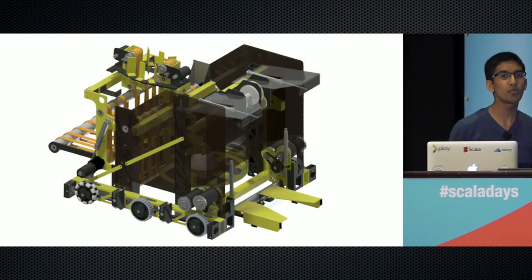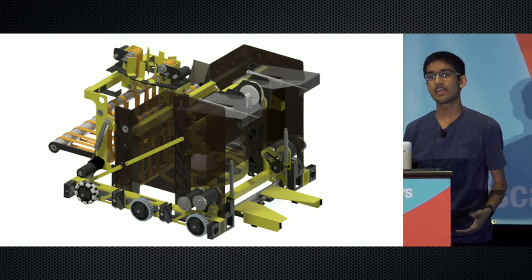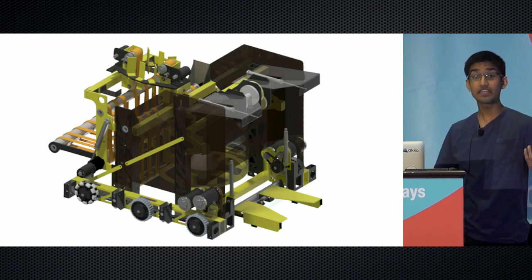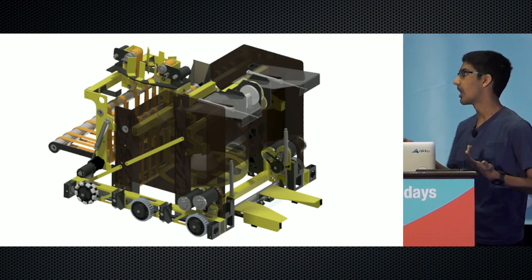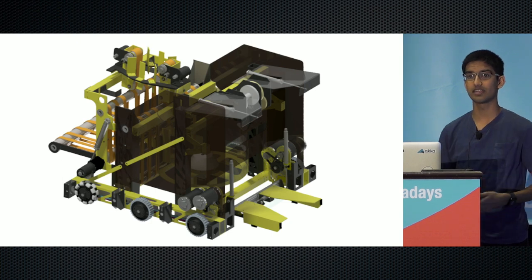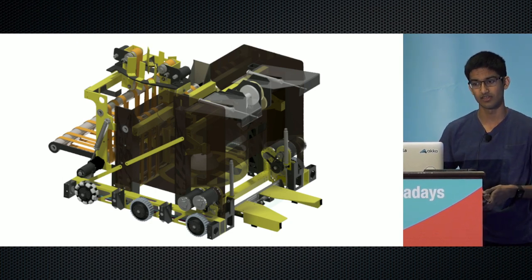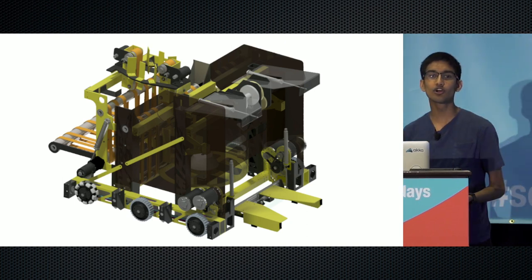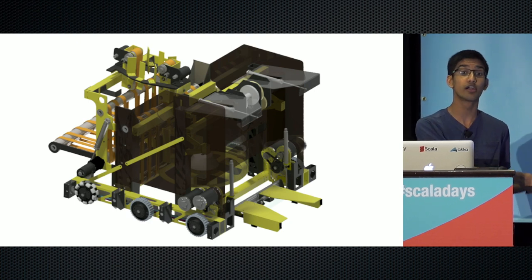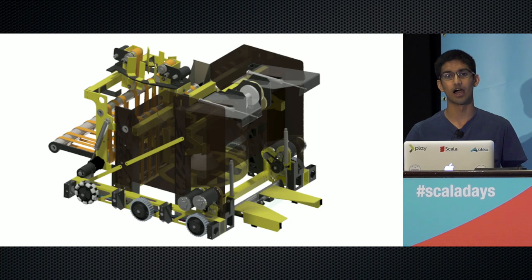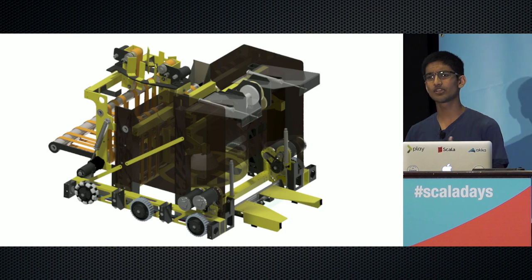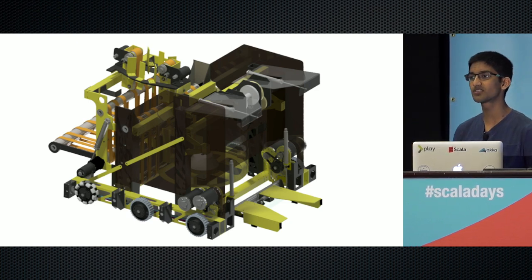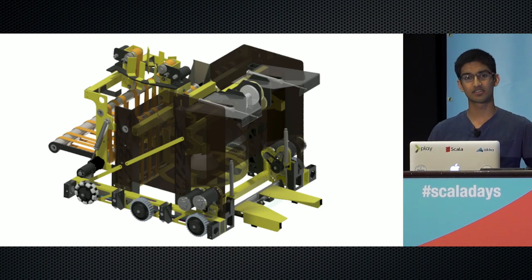With our robot, the job of the software is to orchestrate all of these components to perform a variety of tasks. In each match you have 15 seconds to perform autonomous actions with higher point values — our robot can shoot balls and drop off gears autonomously. For the rest of the match you have human control, but we want to automate a lot of processes so our human players can focus on strategy. Automating the different steps of scoring points is a core functionality of our software.